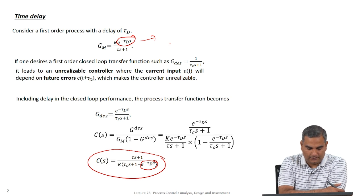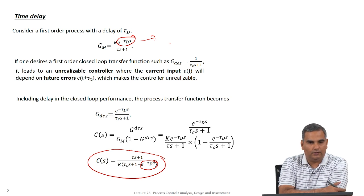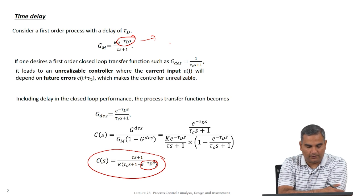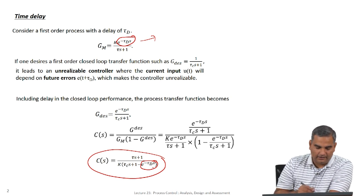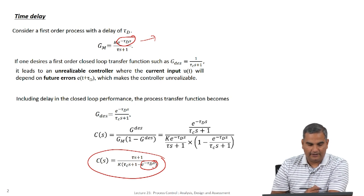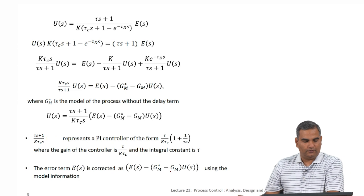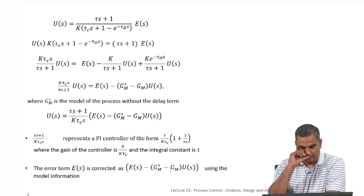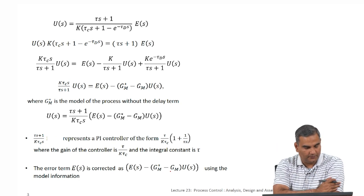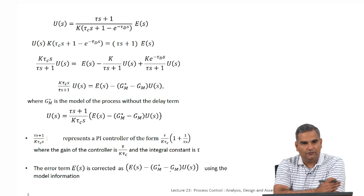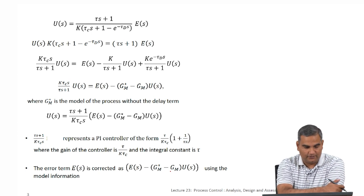What I am going to do in this lecture is look at other ways of thinking about this problem where we do not use an approximation such as numerator by denominator polynomial for the e to the power minus tau_d*s term. We will handle this term as it is, understand its implications in the denominator, and design a controller for time delay systems. The goal is to implement the controller without ever using the Padé approximation.